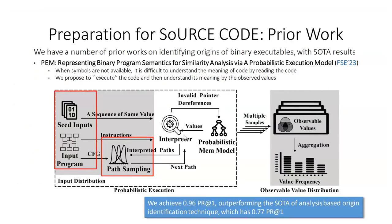This year at FSE, we have another technique — a binary interpretation technique that interprets two programs without requiring environment setup — which also allows us to determine whether two programs are similar or not. We are able to achieve state-of-the-art accuracy, for example 96% precision at rank-1 accuracy, which outperforms the state of the art.